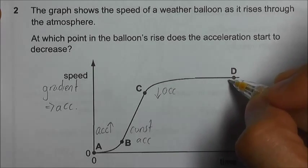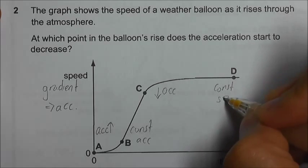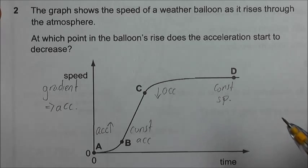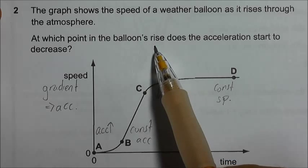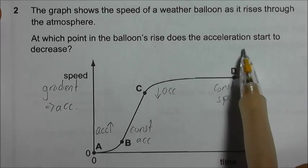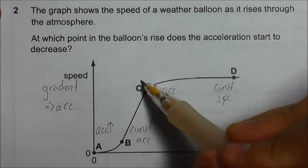And at D is a horizontal line. So we have a constant speed with zero acceleration. So since we are looking at the point in the balloon's rise where the acceleration starts to decrease, C is our answer.